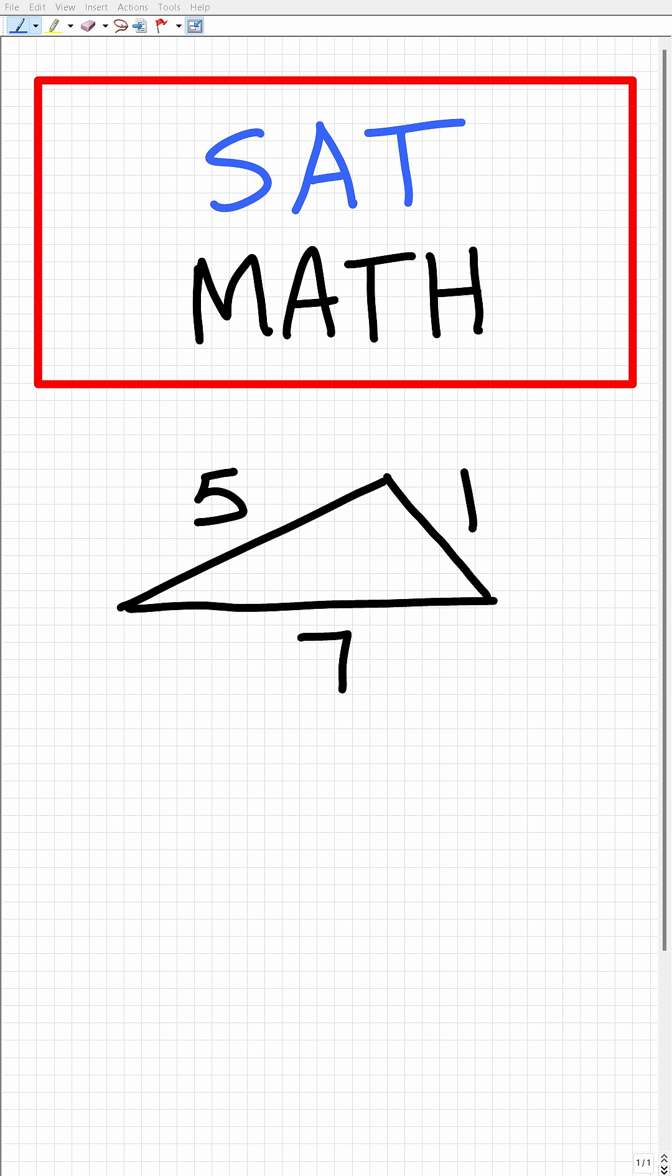If you're fully ready for the SAT math sections, you should be able to tell me whether in fact this is an actual real triangle. So we have something here that looks like a triangle. This length is 7, this length is 5, and this length is 1. But can we really construct a triangle with these lengths?